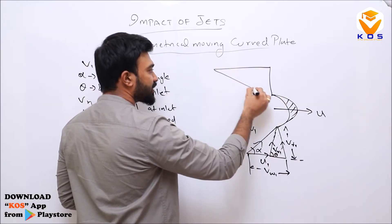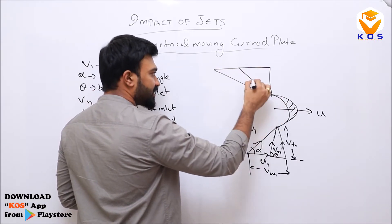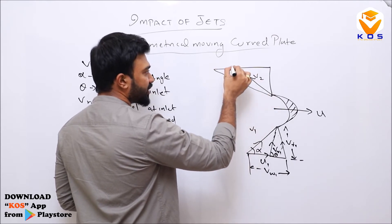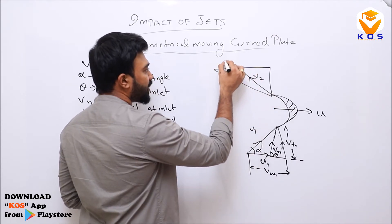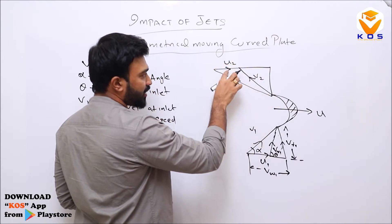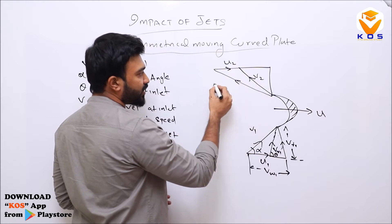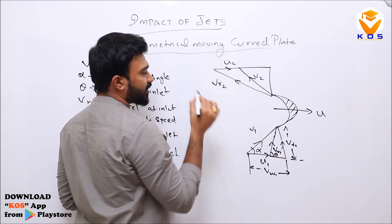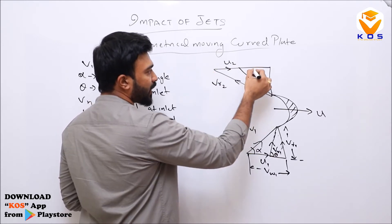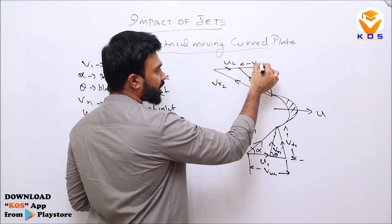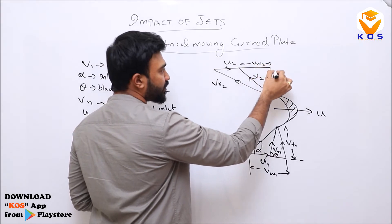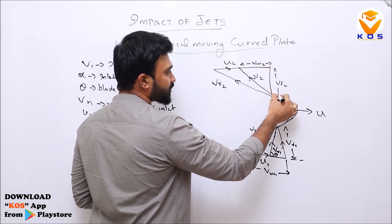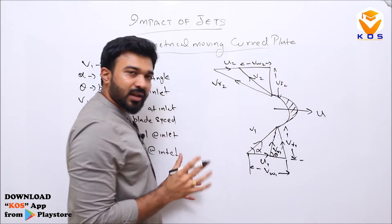For the exit side, we have the same components with subscript 2: V2 (exit velocity), U2 (exit blade speed), relative velocity Vr2, horizontal component Vw2, and vertical component Vf2. This is very important.